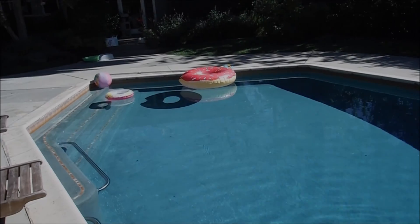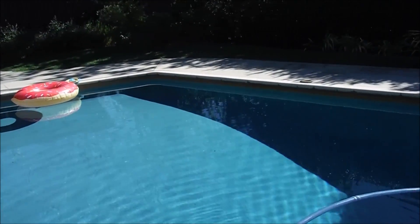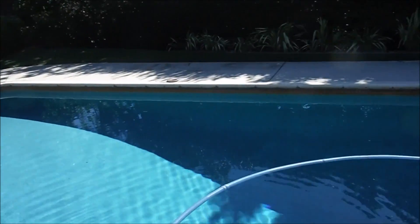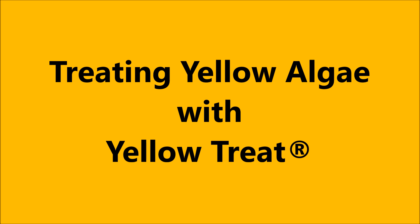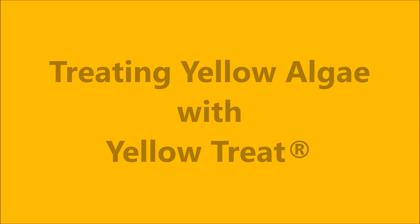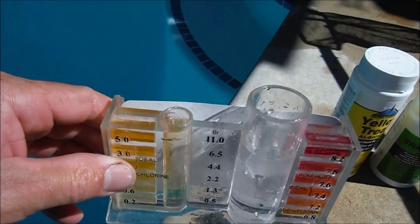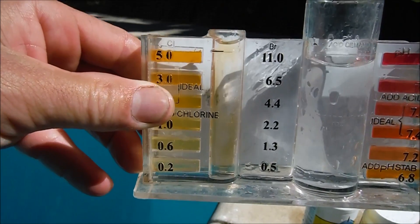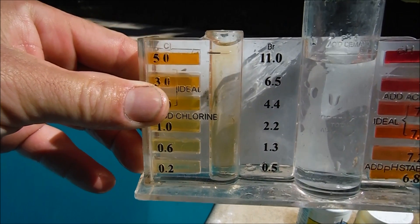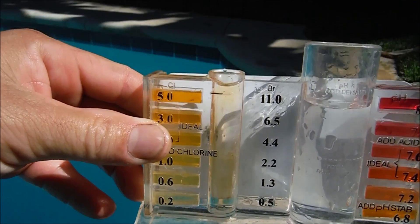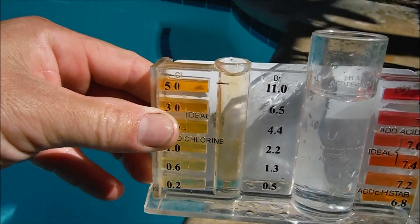In most cases, if you keep your pool balanced all year long you're not going to have any problem with algae. This pool has some yellow algae in the deep end. You want to test the pool water — this one has a chlorine level of about 1.0. You want to raise it up to 3.0 or higher before you start the algae treatment.